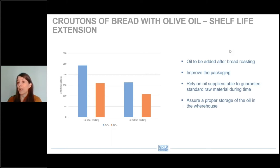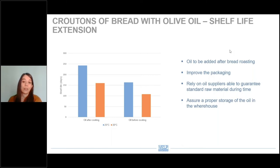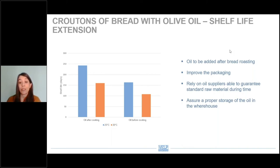Thanks to this application, we were able to give concrete suggestions to the producer in order to extend the shelf life: the oil should be added after roasting; the packaging should be improved by using modified atmosphere to exclude oxygen, and also by using a film that protects the product from light. Moreover, thanks to analysis we made on the oil batches they provided us, they should rely on suppliers more able to guarantee standard raw material over time, and should assure proper storage of the oil in the warehouse.